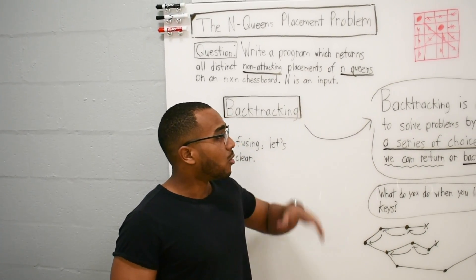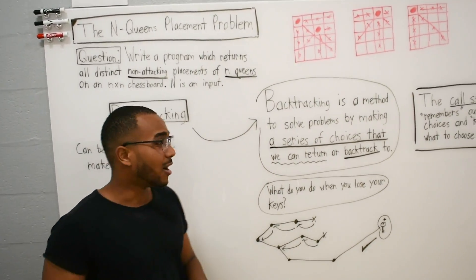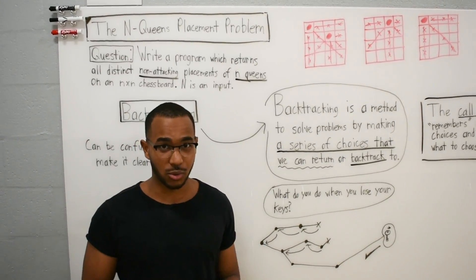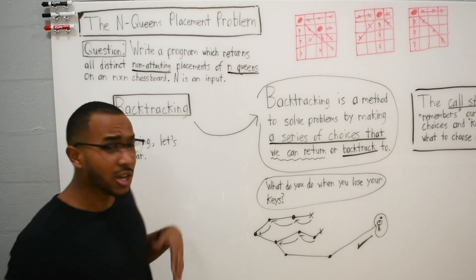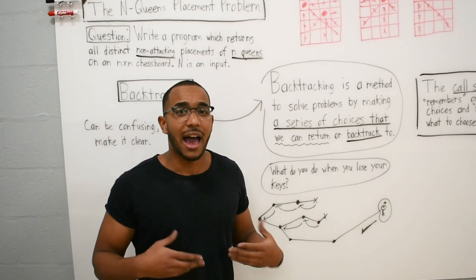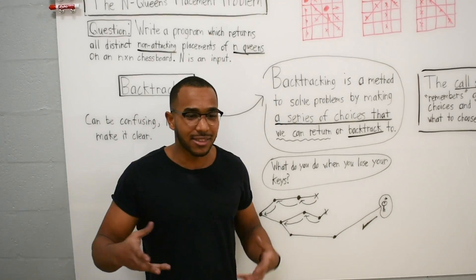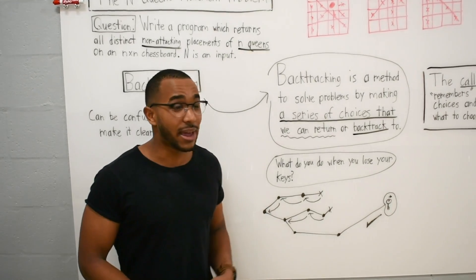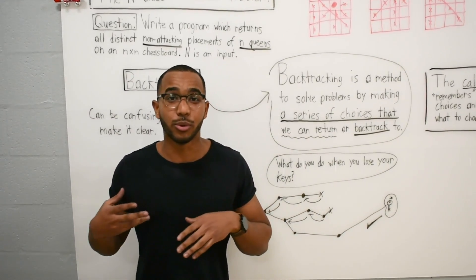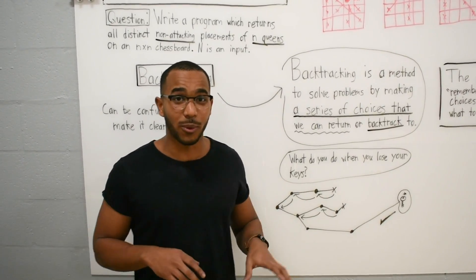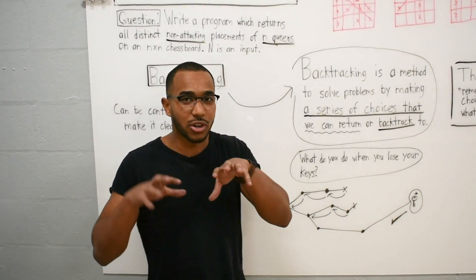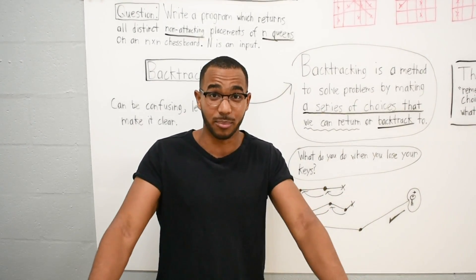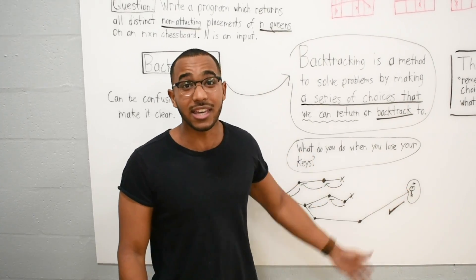So what is backtracking? Backtracking is a method of solving problems where we make a series of choices that we can return or backtrack to — that's where the term comes from. An example is when you lose your keys: your brain thinks back to where your keys were at previous points in time. Maybe you left them in the garage, maybe in the room. When you're in the room you say no, let me go forward, let me go downstairs to the kitchen. These are each decision points, and at each decision point you have a range of possibilities to explore until you find your goal.